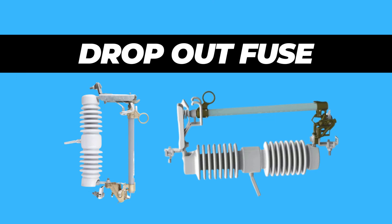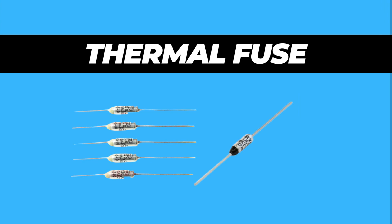Dropout fuses are a type of expulsion fuse with the fuse link separated from the fuse body. These fuses have two main parts: the cutout body and the fuse holder. The thermal fuse uses temperature signals and elements for protection against overcurrent or a short circuit.